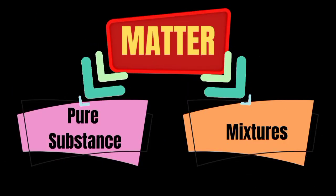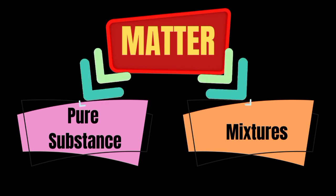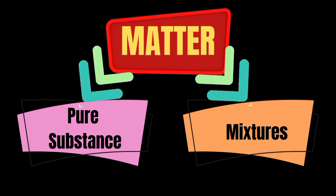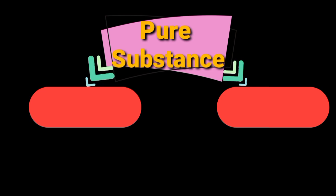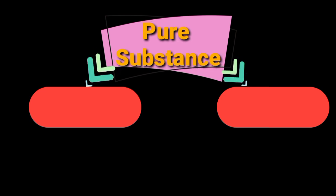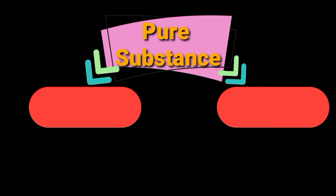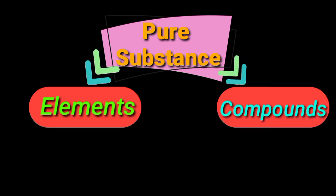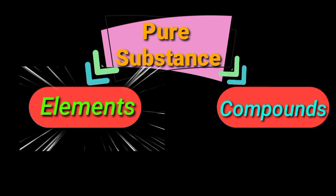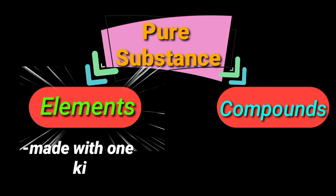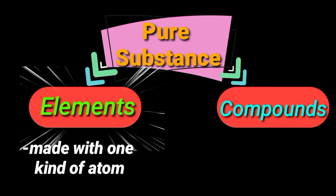All matter consists of pure substances or mixtures. A pure substance is a kind of matter that cannot be separated into other kinds of matter by any physical process. Pure substances are of two types: elements and compounds. An element is a substance made of one kind of atom and cannot be decomposed by any chemical reaction into simpler substances.